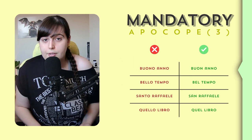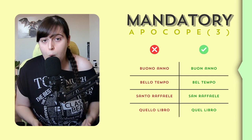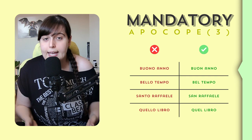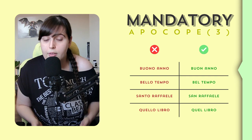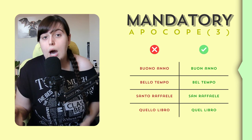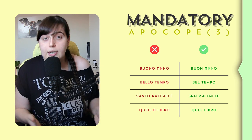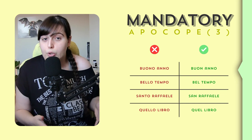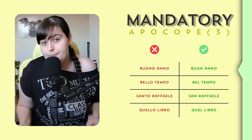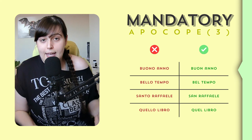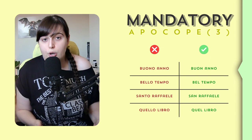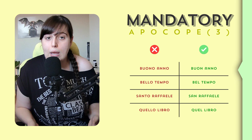Third, with the adjectives 'buono' (good), 'bello' (beautiful), 'santo' (saint), and 'quello' (that). For example, not 'buono anno' but 'buon anno' (happy new year); not 'bello tempo' but 'bel tempo' (nice weather); not 'santo Raffaele' but 'San Raffaele' (Saint Raphael); not 'quello libro' but 'quel libro' (that book).